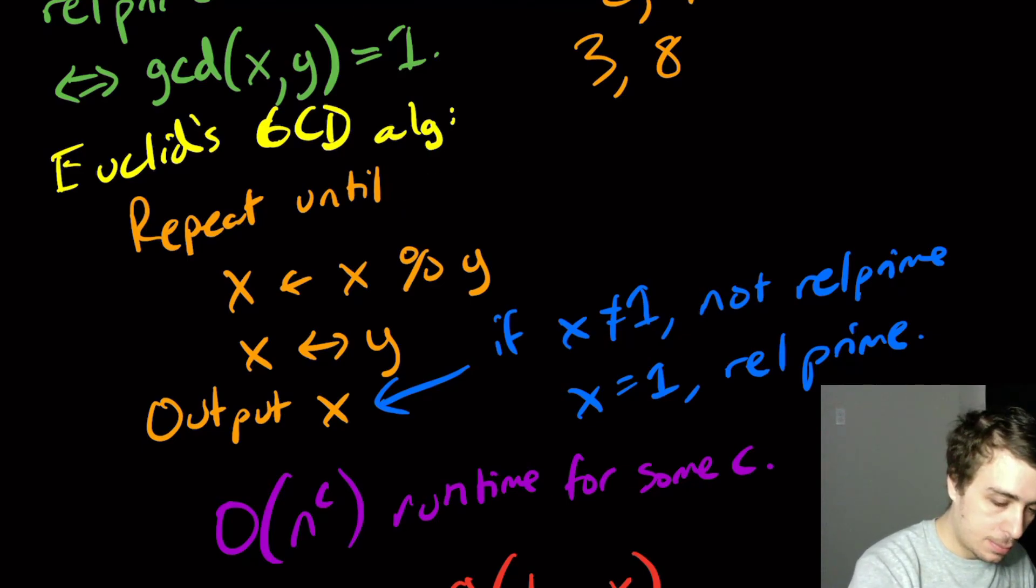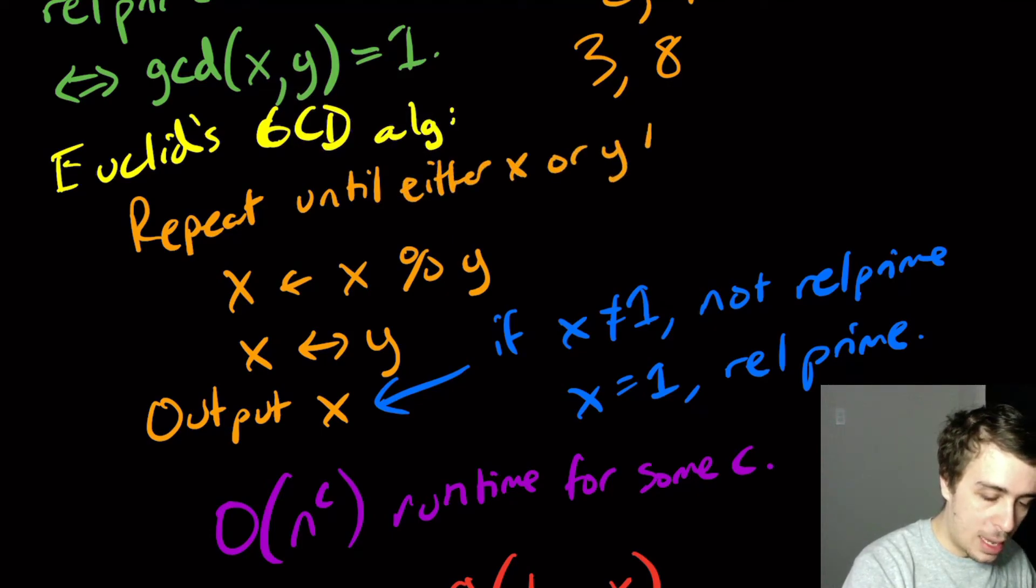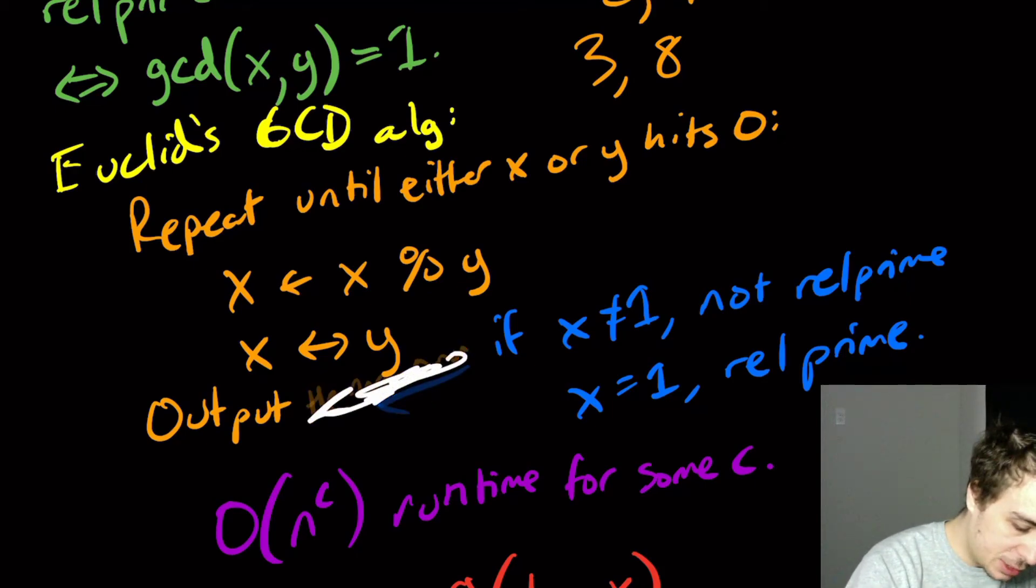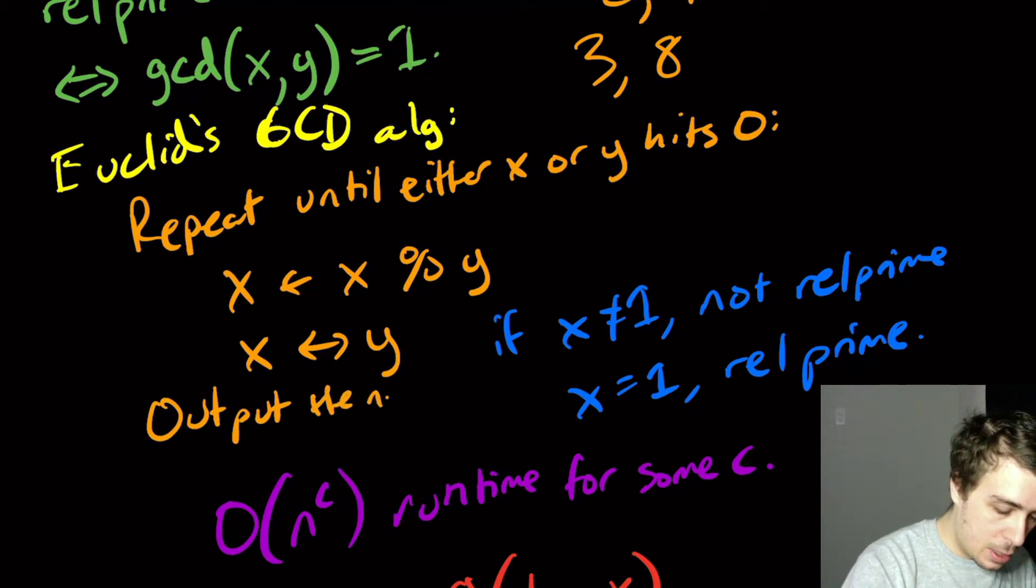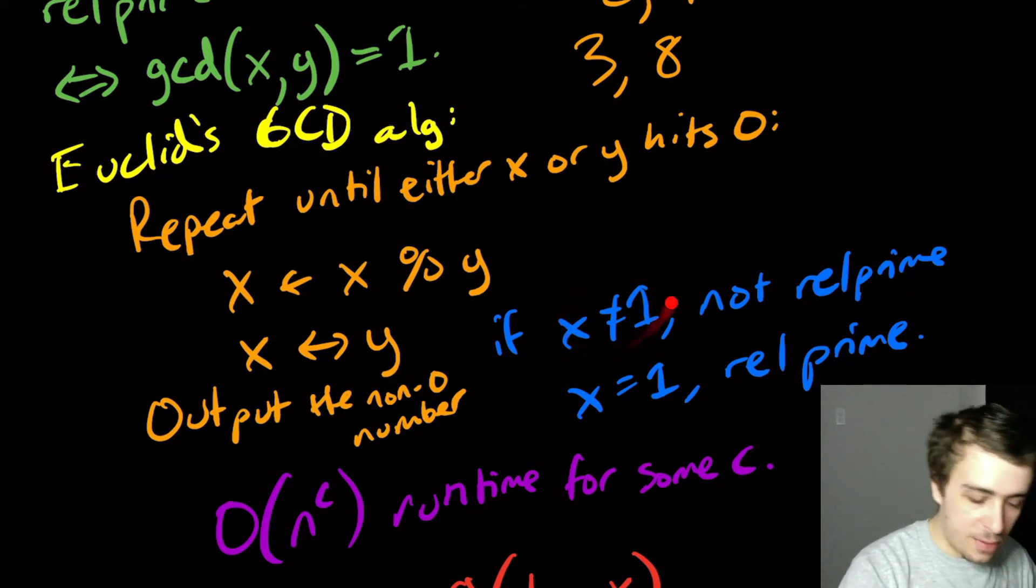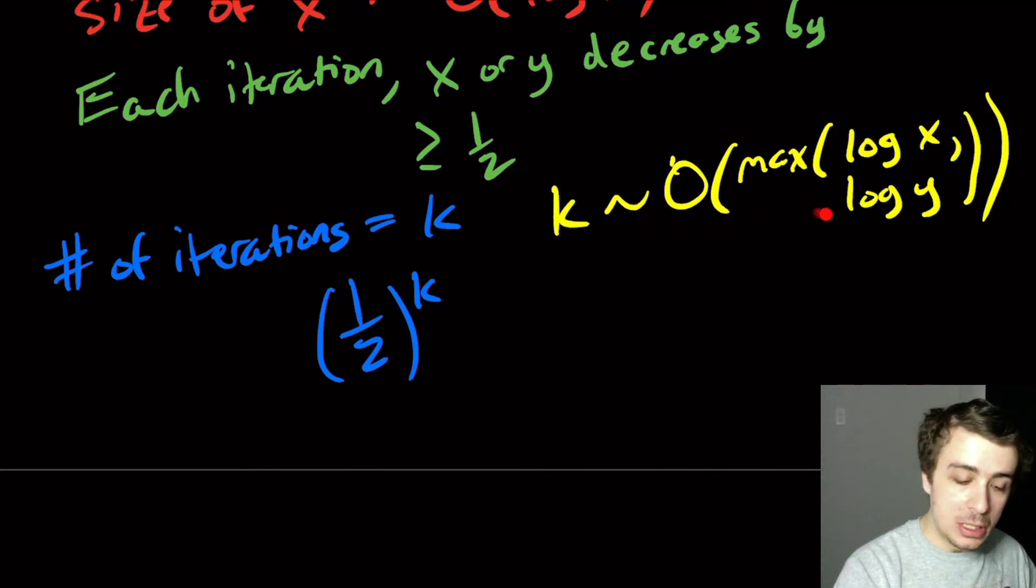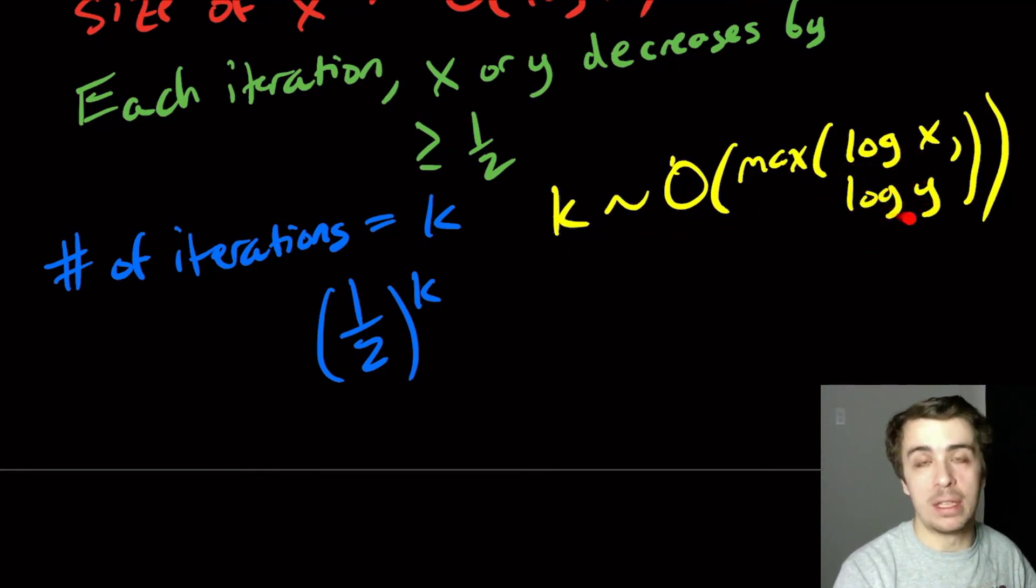I should say until either x or y hits zero. And then output the non-zero number. And if it happens to be x, we have this reasoning here.